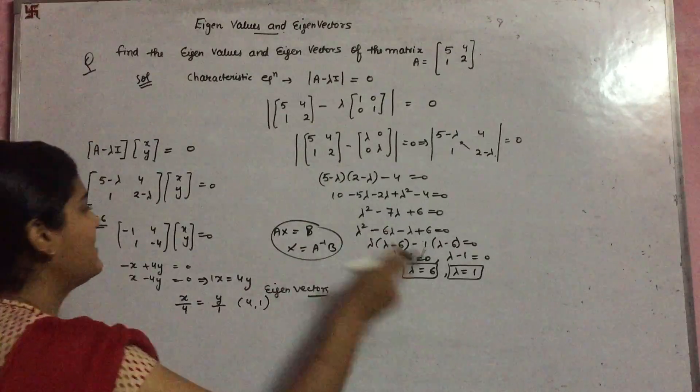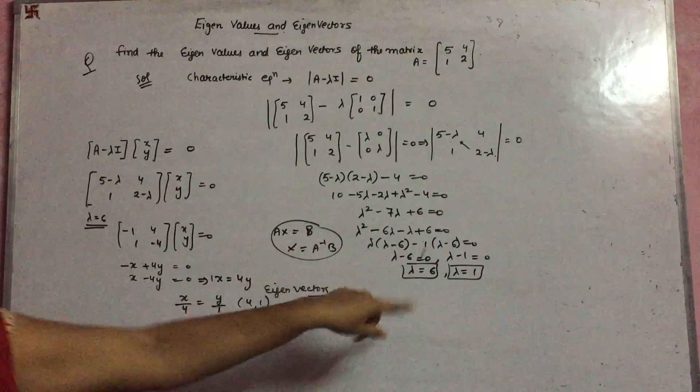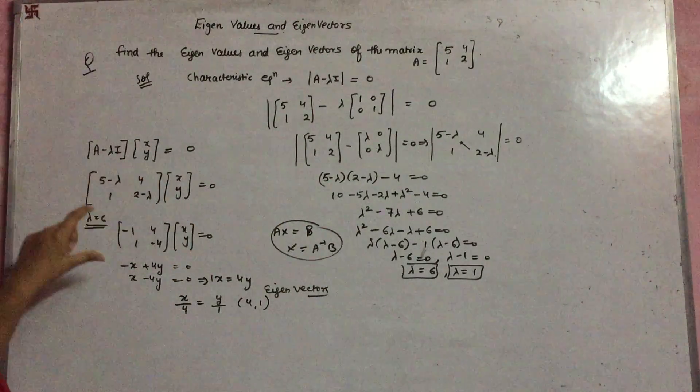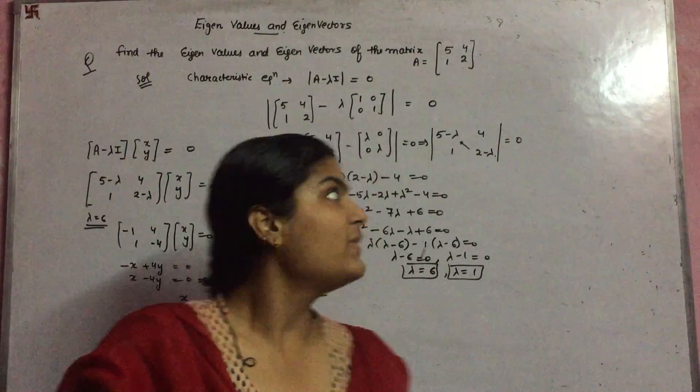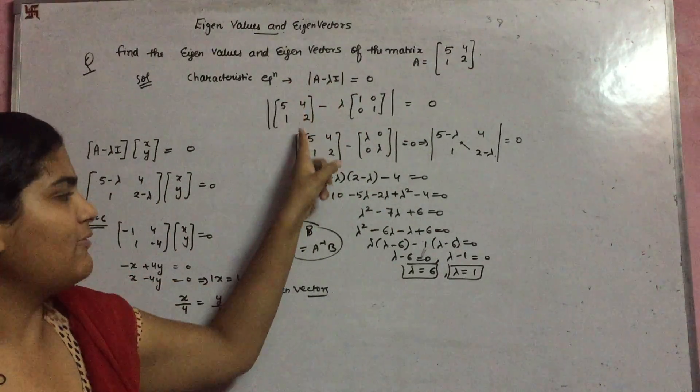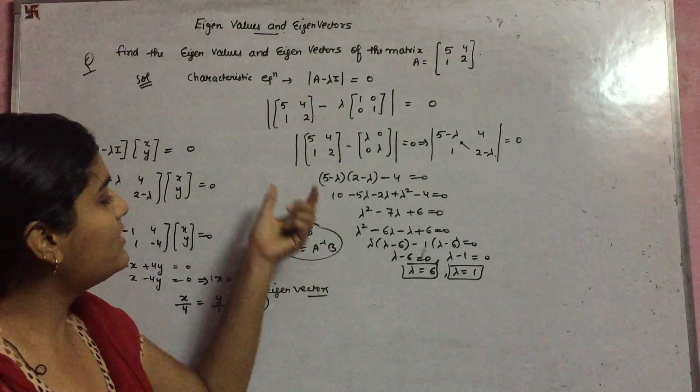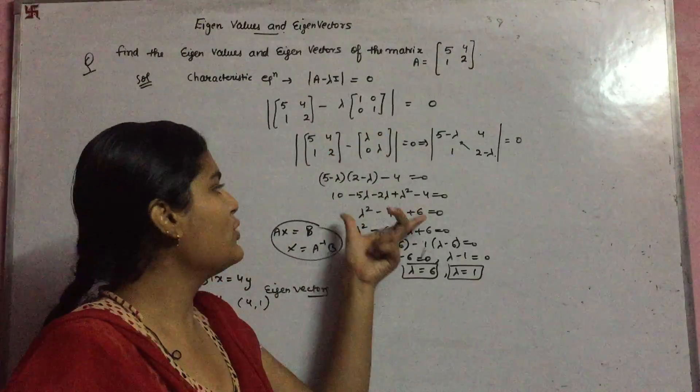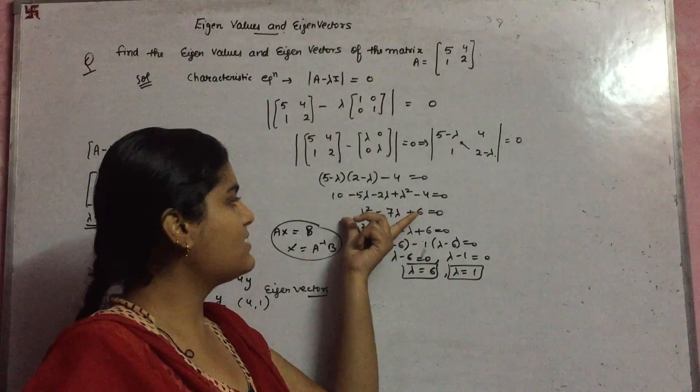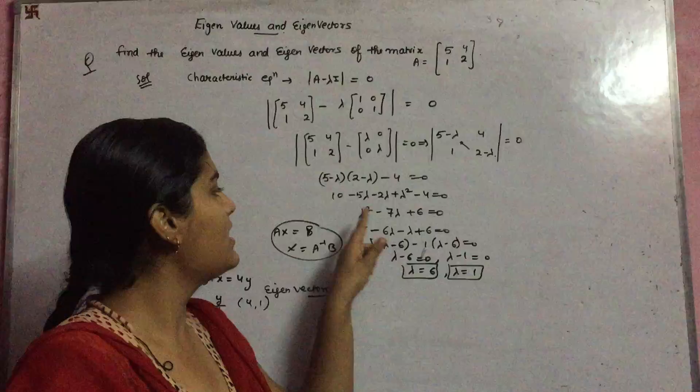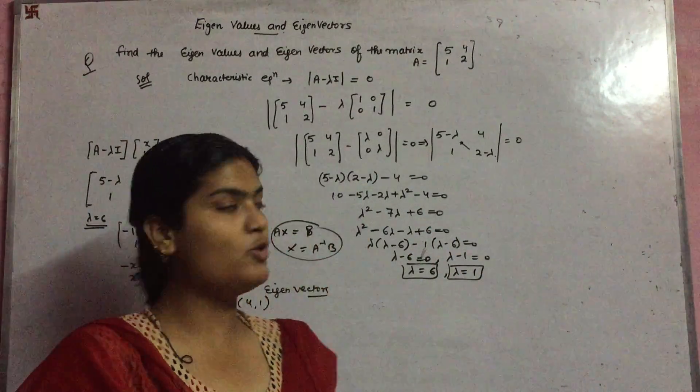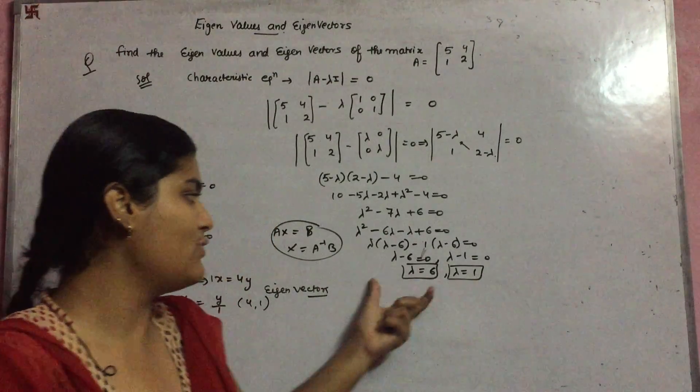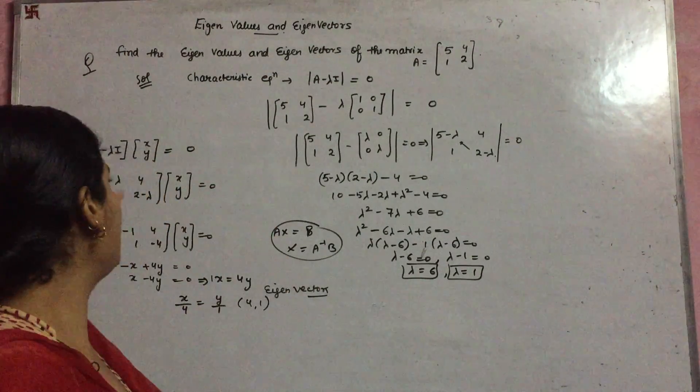Similarly, you substitute λ = 1 and find the other eigenvector. I hope you understand. This is the same way for a 3×3 matrix. Just do the same, but after putting all values, a cubic equation will be formed. You know very well how to solve cubic equations. There are three factors and you formulate them into each equation. You have three equations and three eigenvectors.